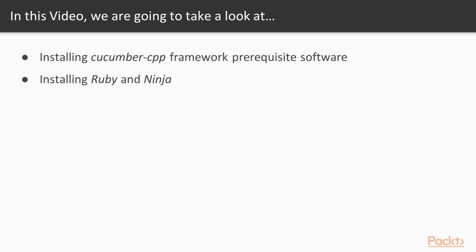In this video we will install the Cucumber CPP Framework prerequisite software. We will also install Ruby and Ninja.